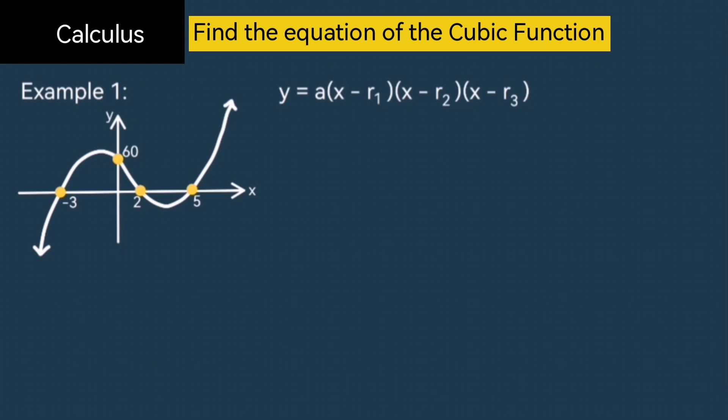Now, substitute these values into your equation, and you'll end up with a times x plus 3, x minus 2, and x minus 5. Okay, we are almost there. Now, you just need to substitute a point to work out a.